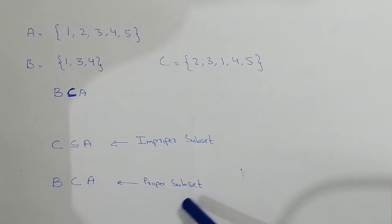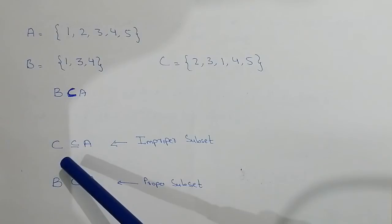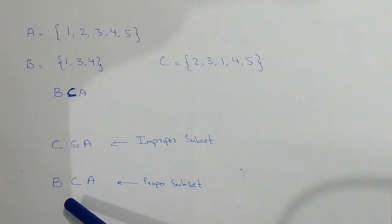And B is the proper subset of set A. In improper subset we give the bar under this sign, and in proper subset we do not give the bar. This is the only difference. Thank you for watching this video.